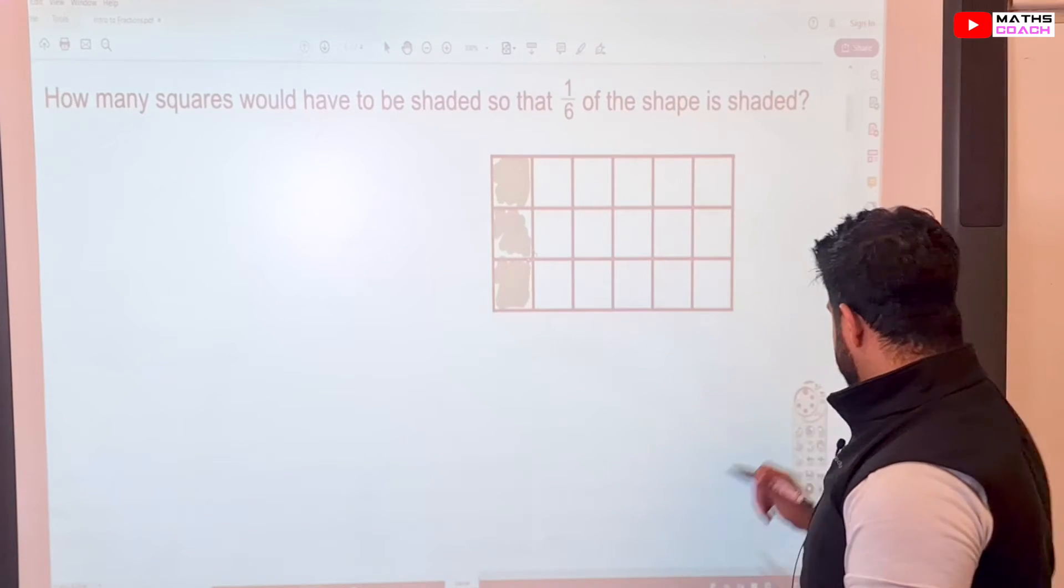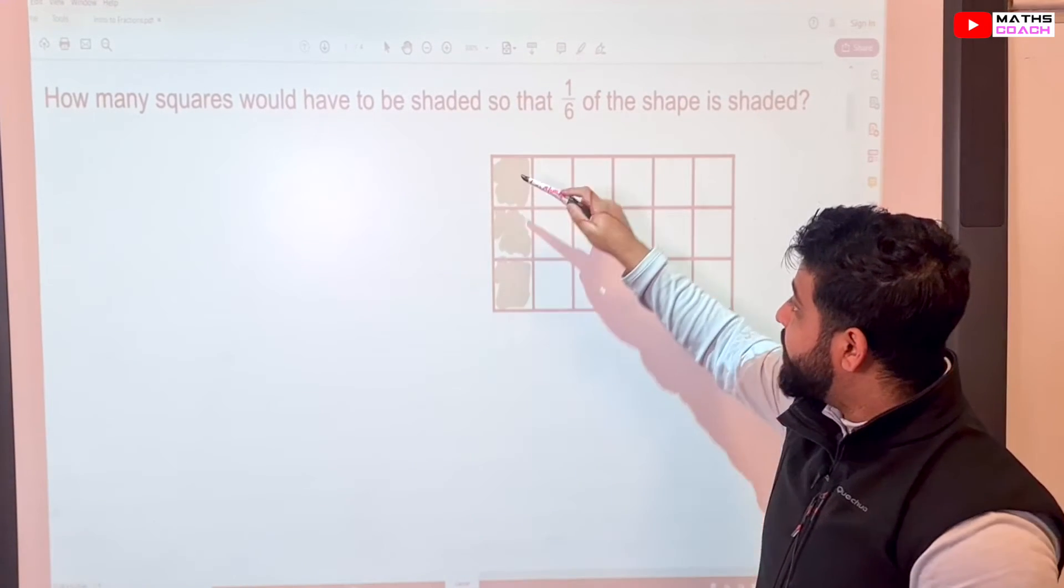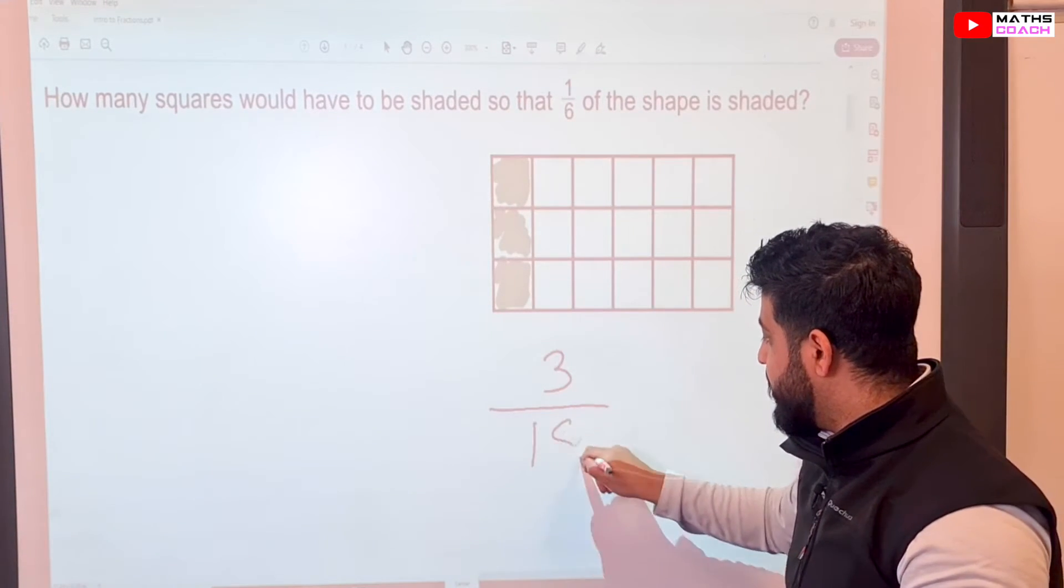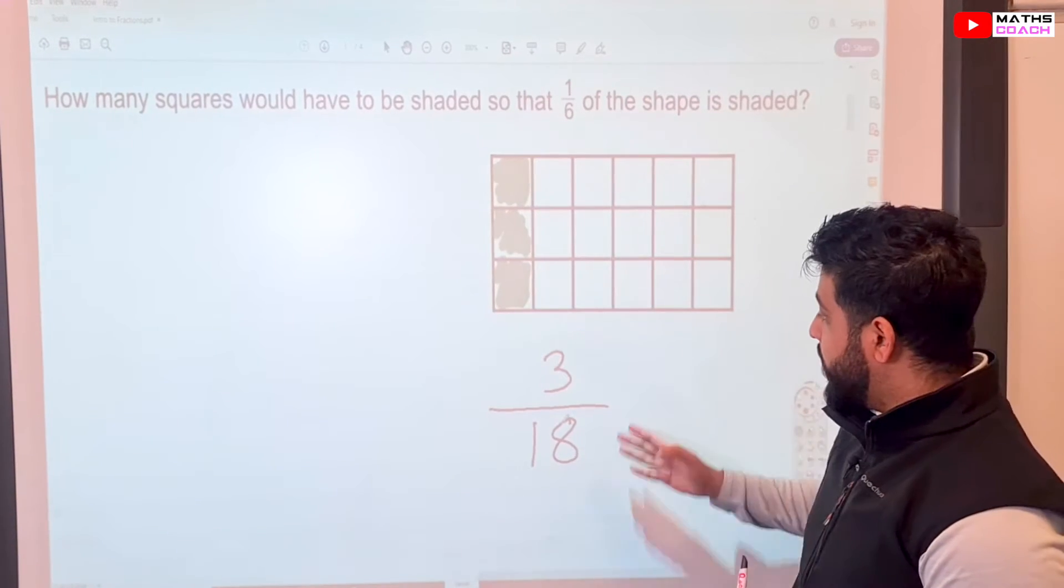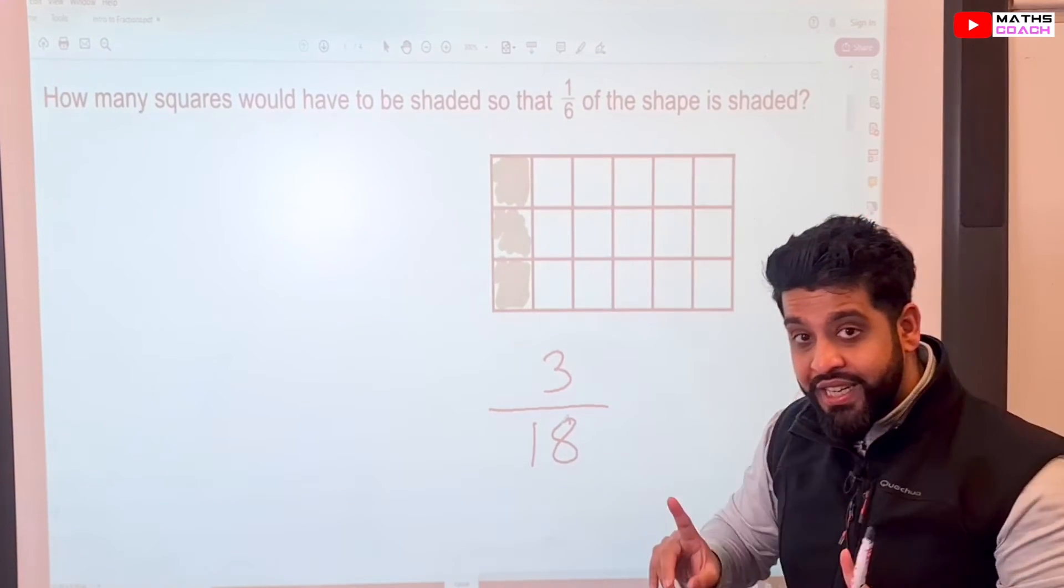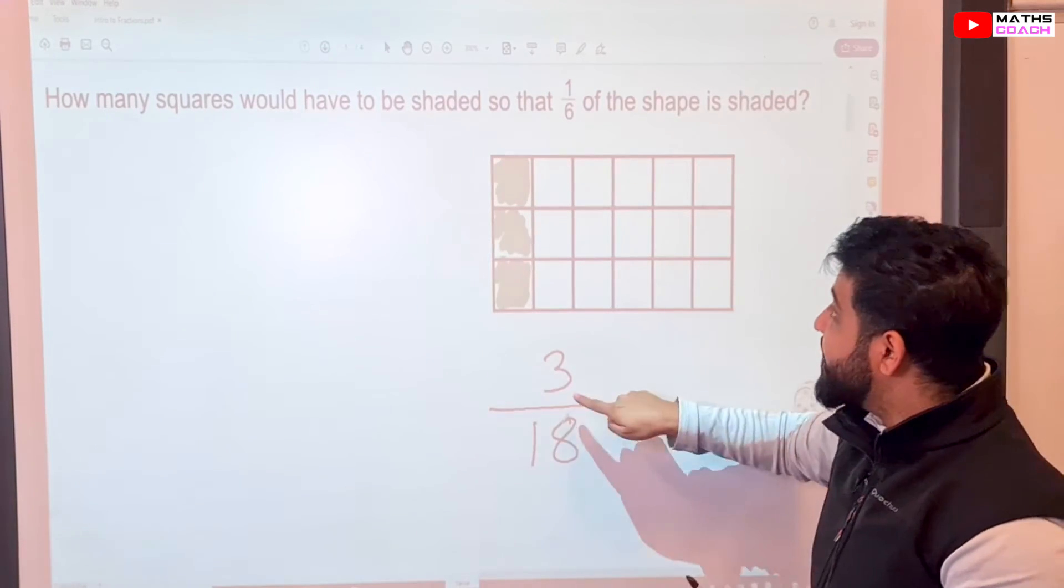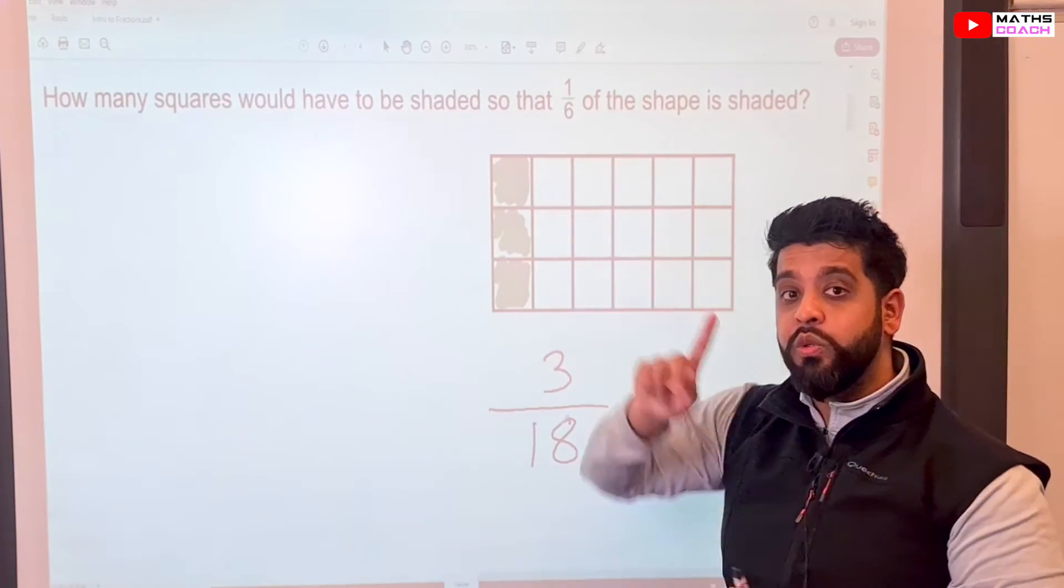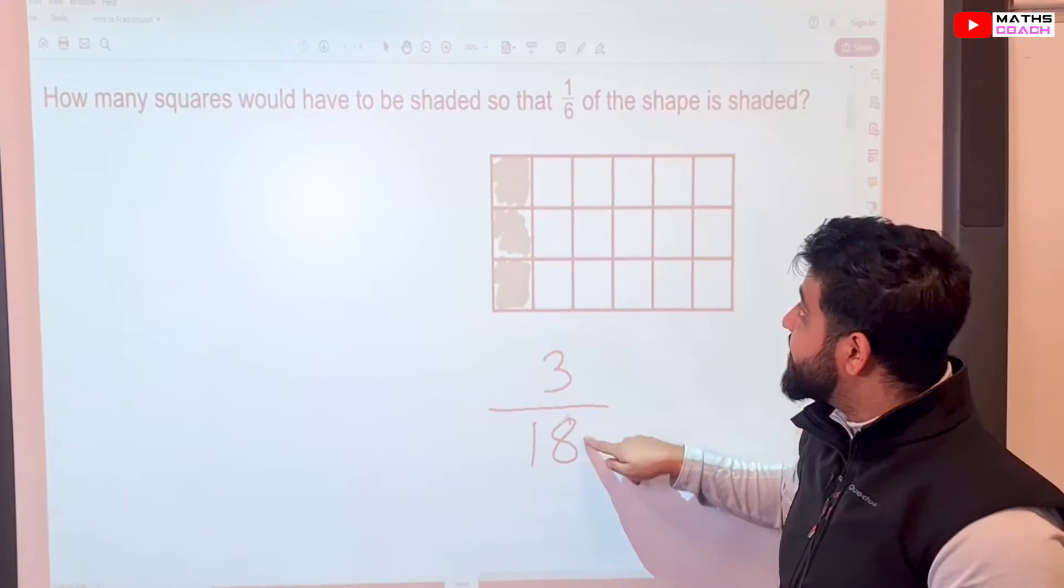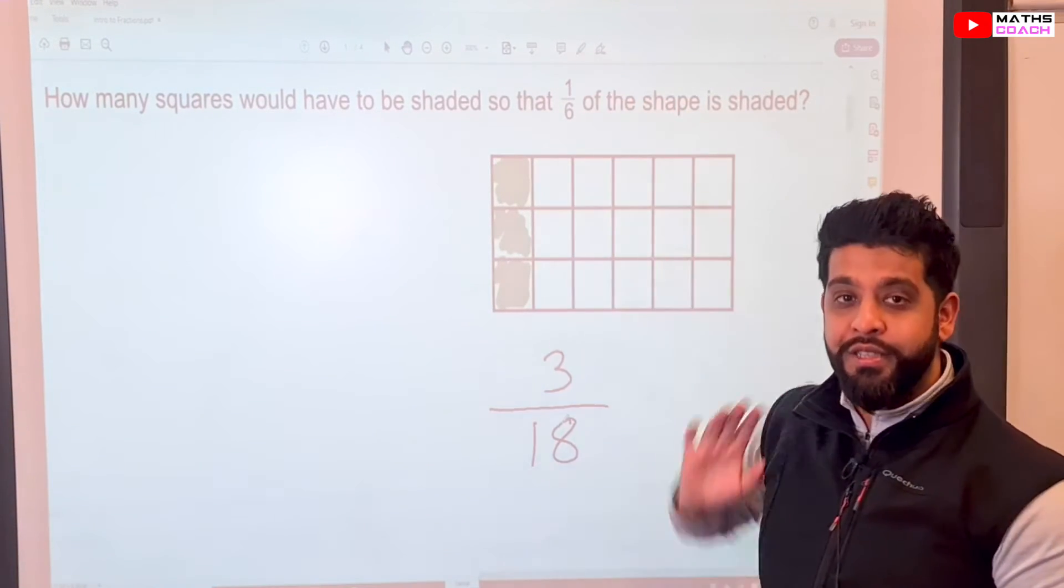So now, if you look at this, we have three squares which have been shaded out of the 18. So that is the fraction of this shape which has been shaded. And this is equal to one over six, which we will look at later. How comes three over 18 is the same as one over six?